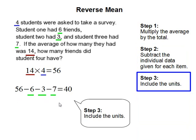And also, don't forget to include the units. So student 4 must have 40 friends, and that is the amount combined with all the friends of the other three students that make up the average of 14. And this completes our problem.